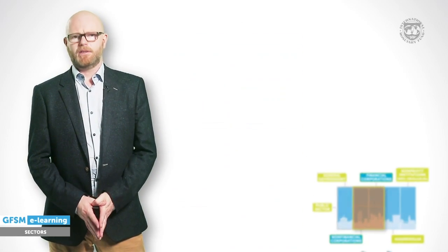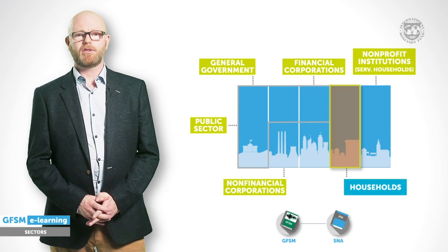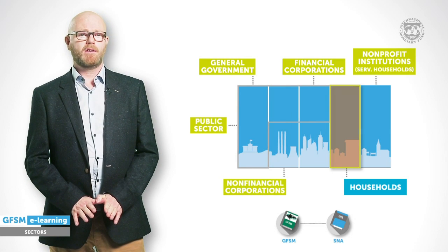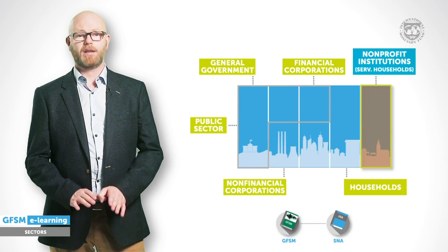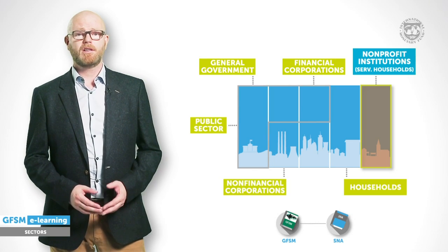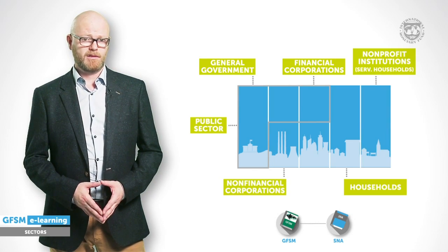Two other sectors complete this presentation. The household sector comprises all physical persons and includes the self-employed. Finally, there is a typically small sector consisting of non-profit institutions that serve households, which includes professional societies, trade unions, charities and philanthropic relief agencies. These five sectors should be defined consistently for all macroeconomic statistics to ensure that data and concepts can be used across different frameworks, such as the national accounts, government finance statistics, the balance of payments, or monetary and financial statistics. In many countries, the National Statistical Agency maintains a central register of all entities constituting these economic sectors.